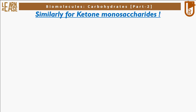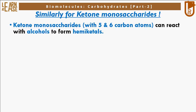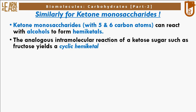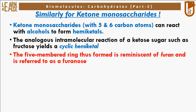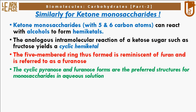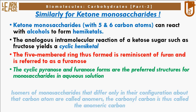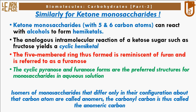Similarly for ketone monosaccharides: ketose monosaccharides containing 5 and 6 carbon atoms can react with alcohols to form hemiketals. The analogous intramolecular reaction of a ketose sugar such as fructose yields a cyclic hemiketal. The 5-membered ring thus formed is reminiscent of furan and is referred to as a furanose. The cyclic pyranose and furanose forms are the preferred structures for monosaccharides in aqueous solution. Isomers of monosaccharides that differ only in their configuration about that carbon atom are called anomers; the carbonyl carbon is thus called the anomeric carbon.